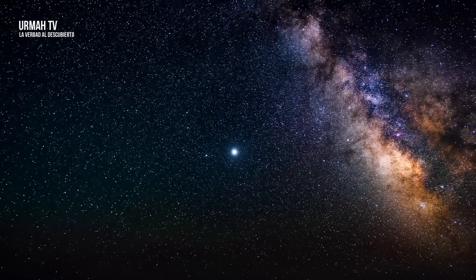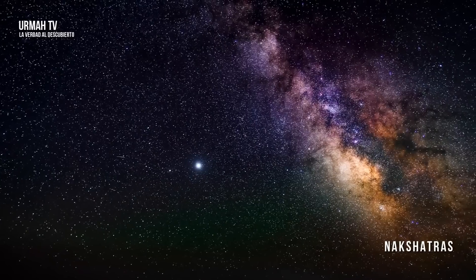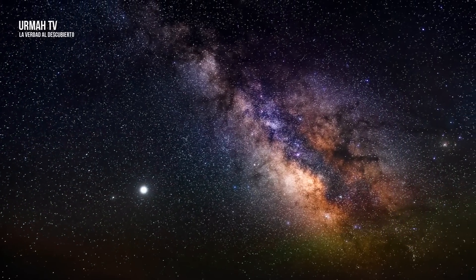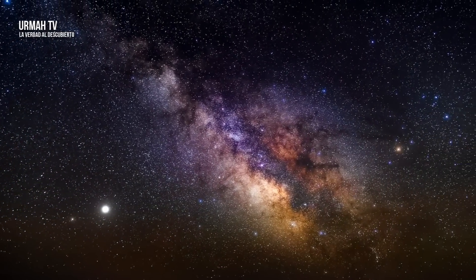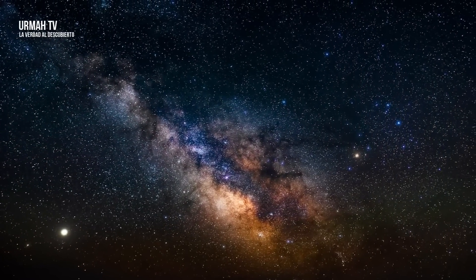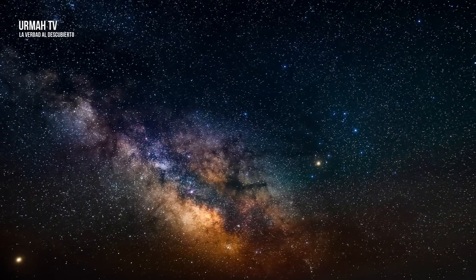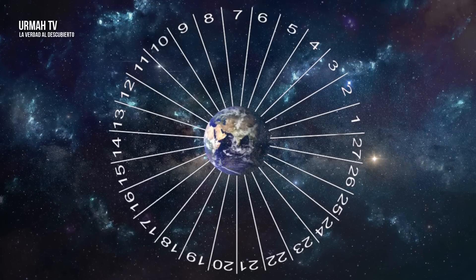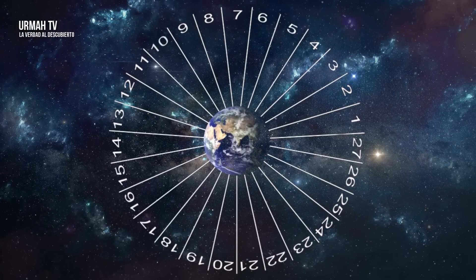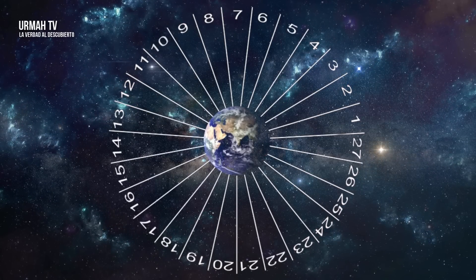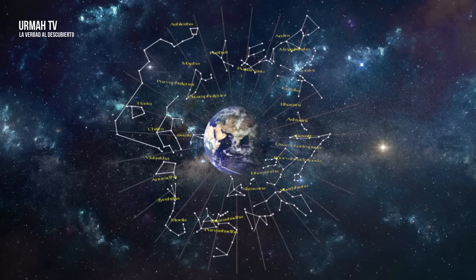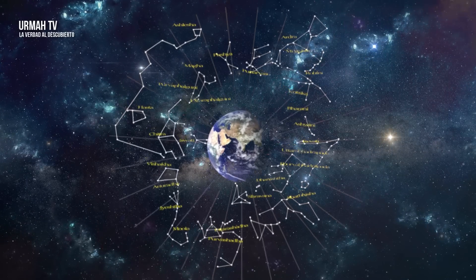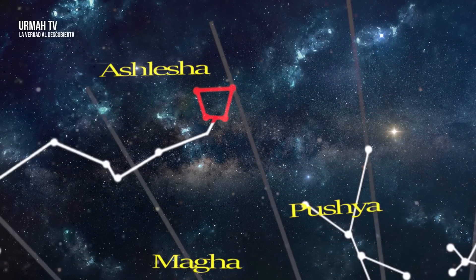Estas son 27 estaciones lunares llamadas Nakshatras. Puedes ver estas estaciones en el cielo nocturno. ¿Pero qué es eso? No es una estación espacial o algo así. Toma el cielo o la eclíptica, y puedes dividirlo en 27 segmentos usando grupos de estrellas como marcadores para cada segmento. Cada segmento se llama Nakshatra o sistema estelar.